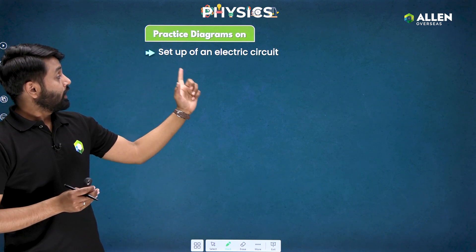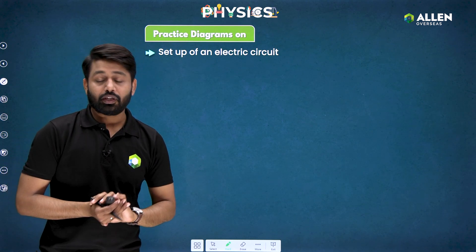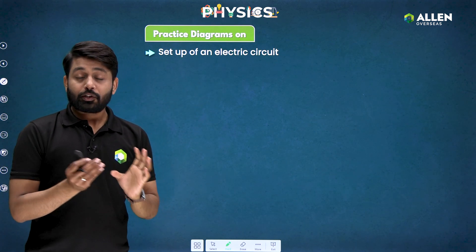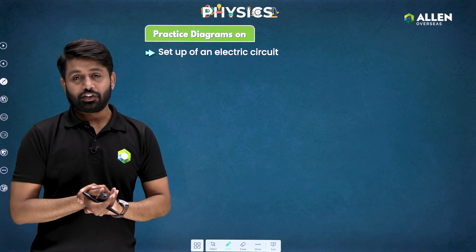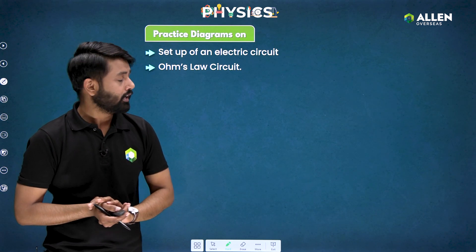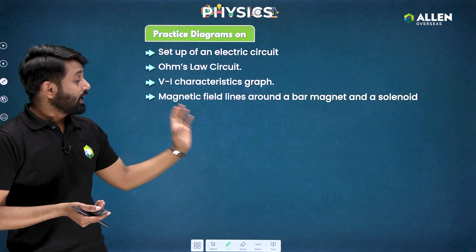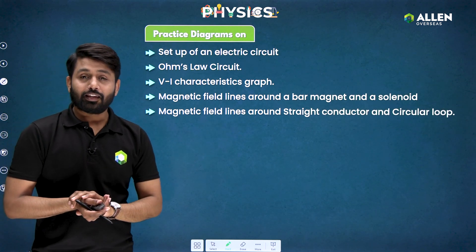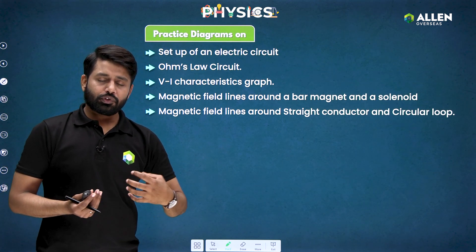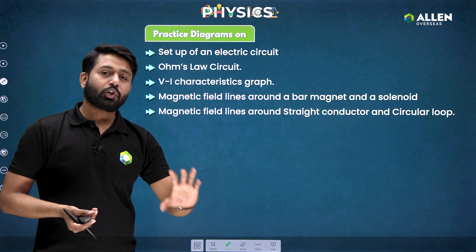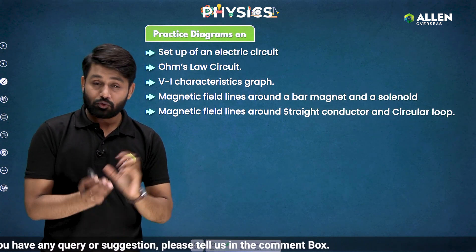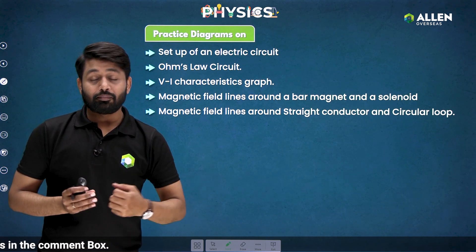For diagram practice, start with the setup of an electric circuit. When drawing diagrams in your board examination, use a pencil. Represent all circuit components by their symbols and show the correct direction of electric current. Also practice the Ohm's law circuit from NCERT, the V-I characteristic curve, magnetic field lines around a bar magnet and solenoid, and magnetic field lines around a straight conductor and circular loop. When drawing field lines for a circular loop, represent the direction of current — both clockwise and anti-clockwise — and draw accordingly.